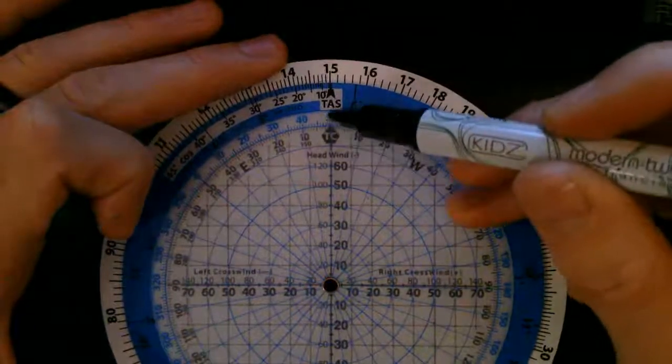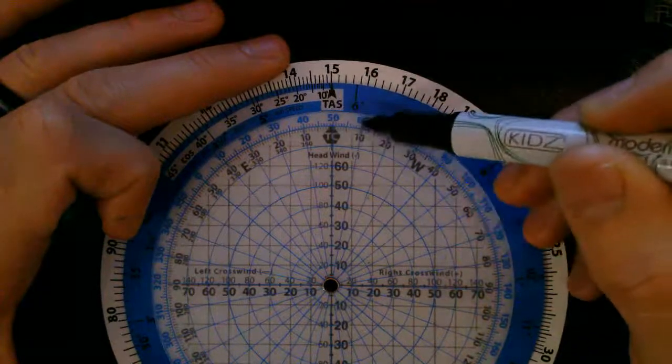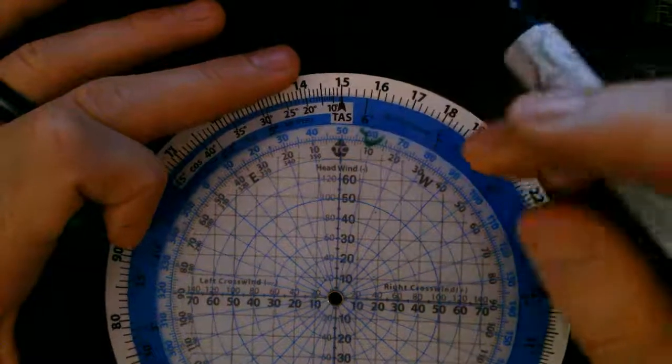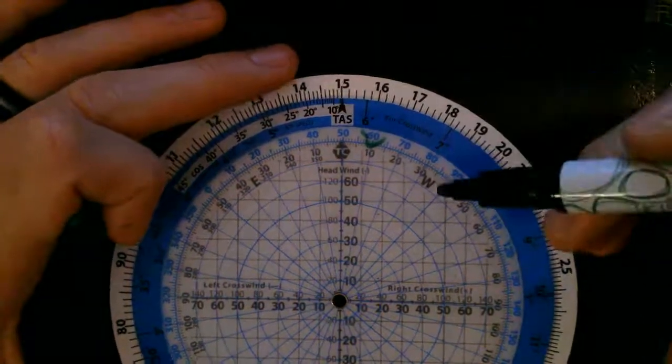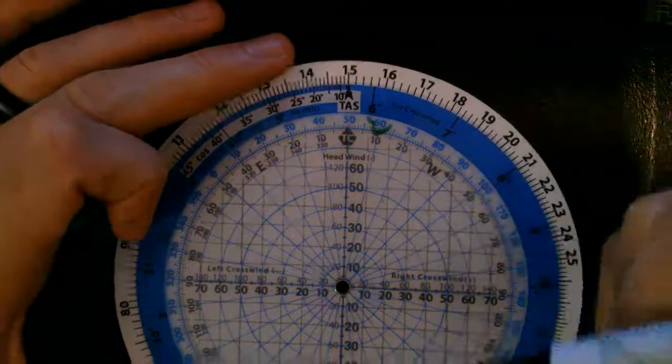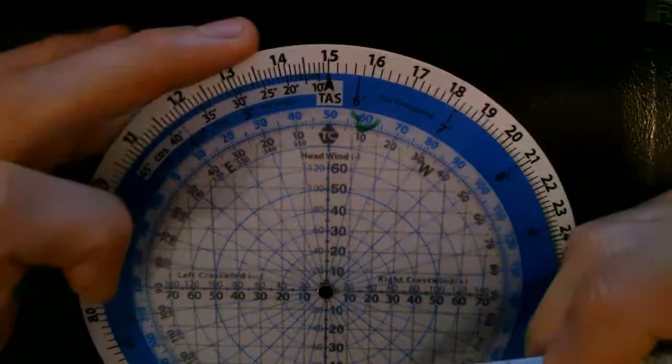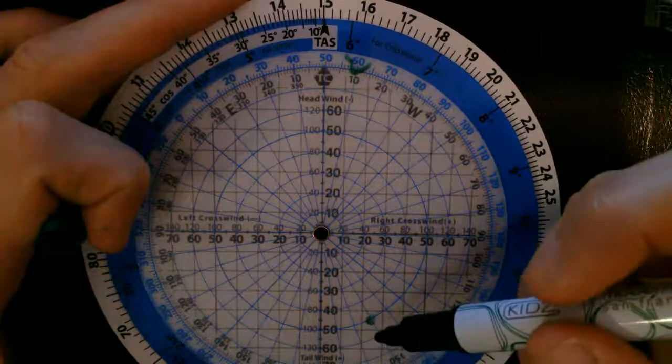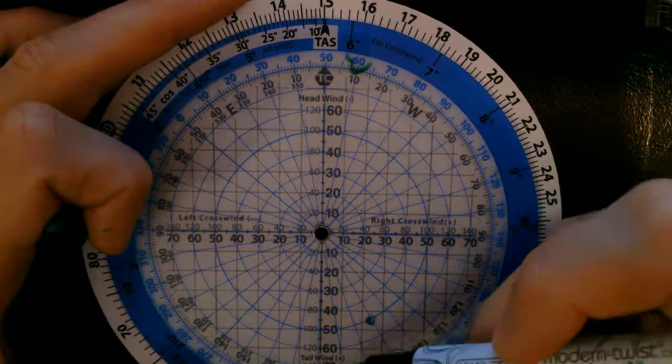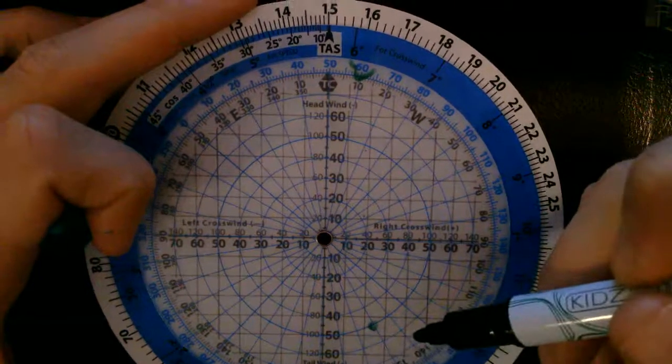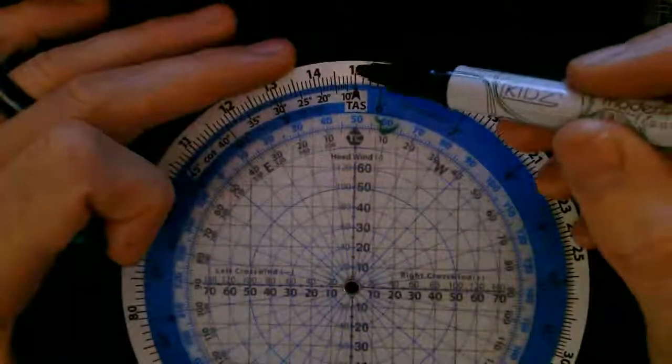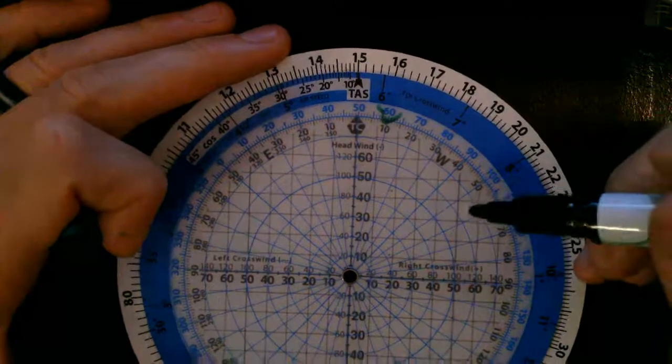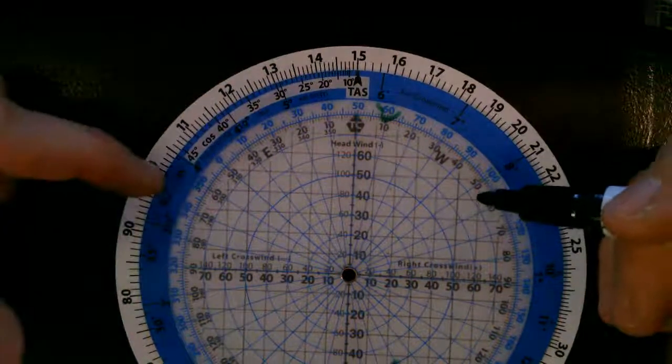So if our true course is 050, then our true heading is going to be 060. Now that we have that done, we also need to calculate our ground speed. So we have a tailwind component of, it looks like, 45 knots. And we know we're going to add it because tailwinds we add. So add 45 knots to our true airspeed, which is 150, and you have 195 knots ground speed. And now that you have ground speed and your heading, you're done.